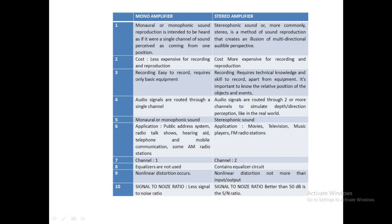Now the difference between the monophonic amplifier and the stereophonic amplifier. Referring to our notes and this slide, 'mono' means one and 'phonic' means sound — so a monophonic amplifier has only one sound channel. 'Stereo' comes from 'stereos' meaning solid, and 'phone' means sound, so that is stereophonic. These are the meanings of the two words.